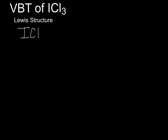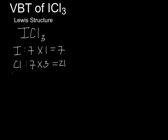To draw the Lewis structure, you have to first know how many valence electrons there are, as well as the total number of electrons in the molecule. In the case of iodine trichloride, iodine has 7 valence electrons and there is 1 iodine in the molecule, therefore 7. For chlorine, there are 7 valence electrons, however there are 3 chlorines in this molecule, therefore 21. When added all together, the total number of electrons is 28.